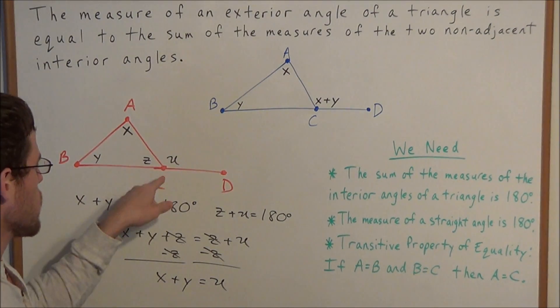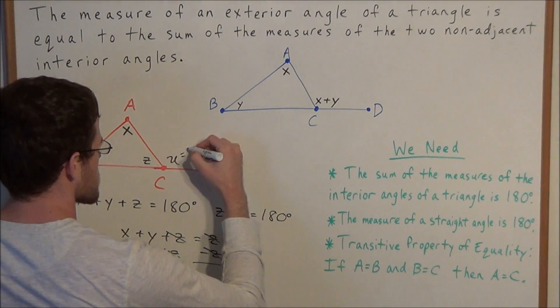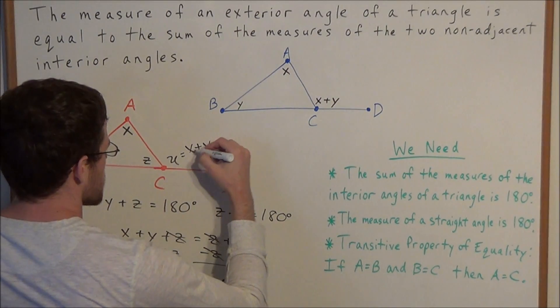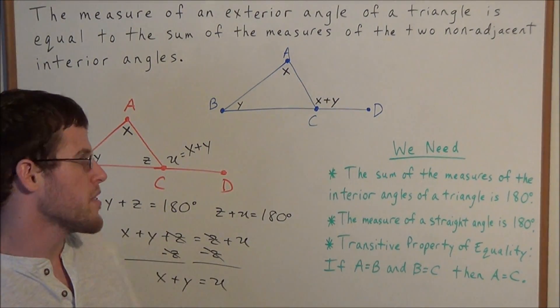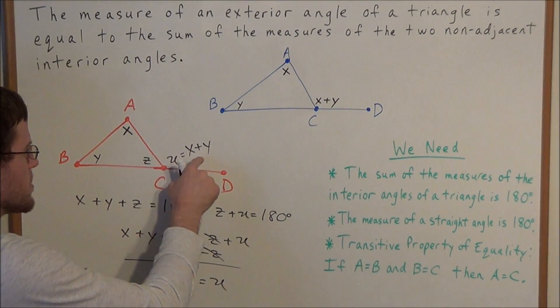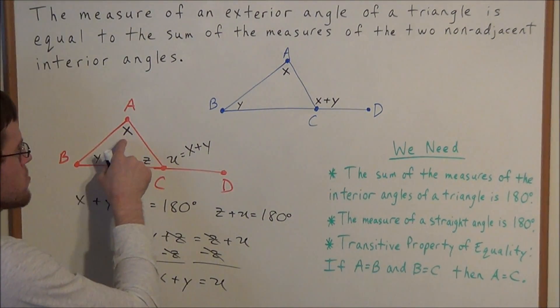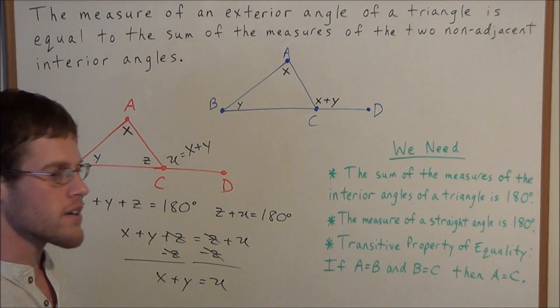Now, instead of calling this U, we could replace this with X plus Y, which is exactly what we wanted to prove from the theorem. We have the measure of this exterior angle is equal to the sum of the two non-adjacent interior angles.